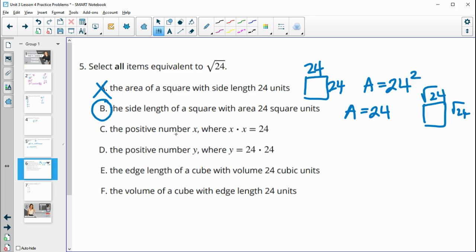The positive number X where X times X equals 24. Yes, that's the definition of a square root. The number times itself that equals kind of that inner number. The positive number Y where Y equals 24 times 24. No, because that's going to be Y equals 24 squared, not the square root of 24.